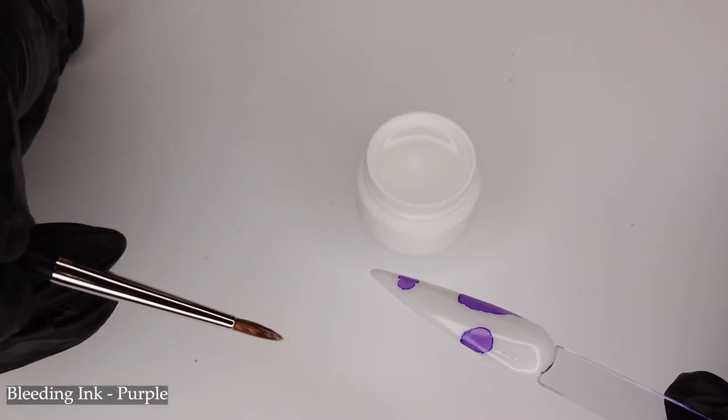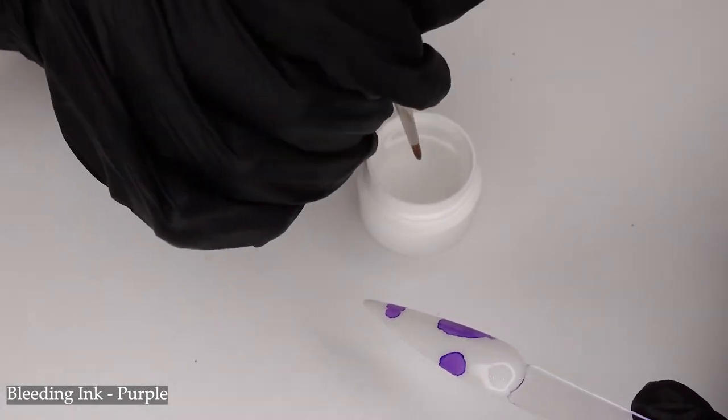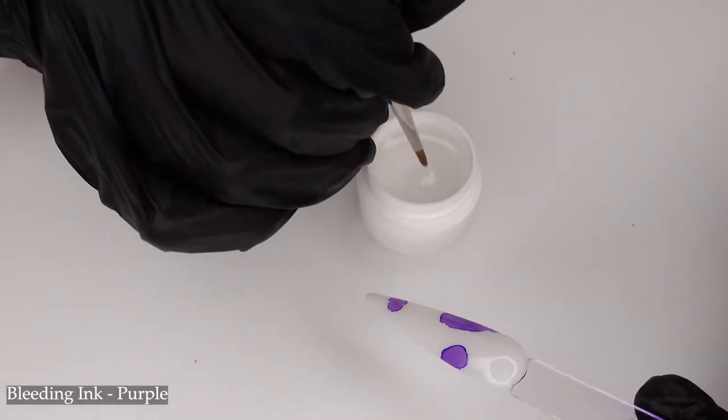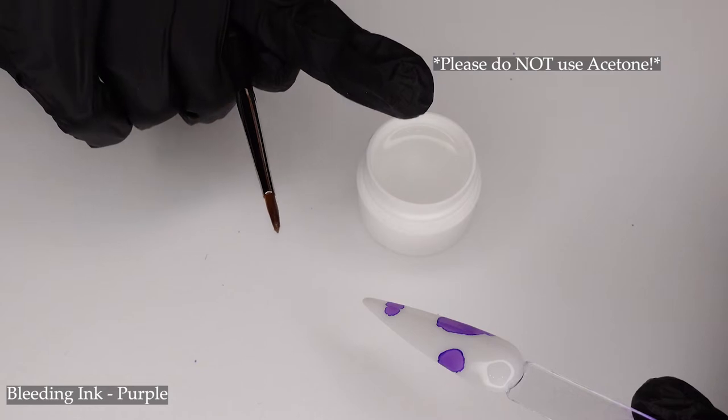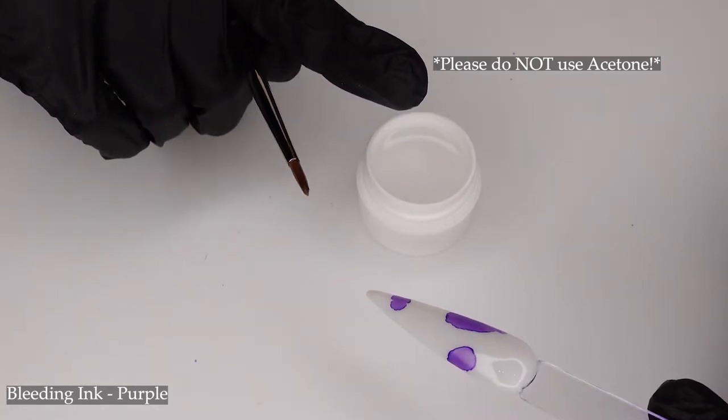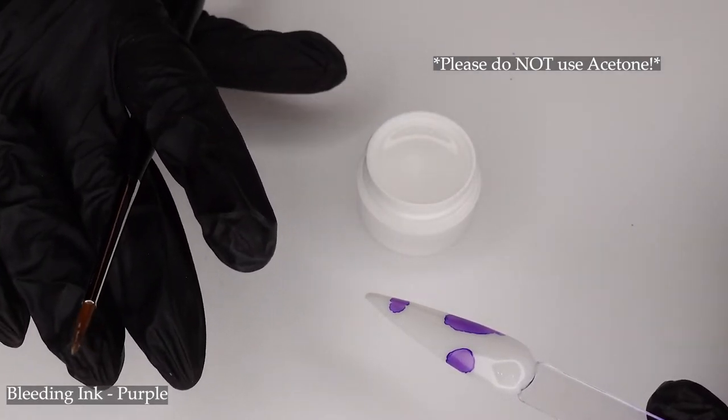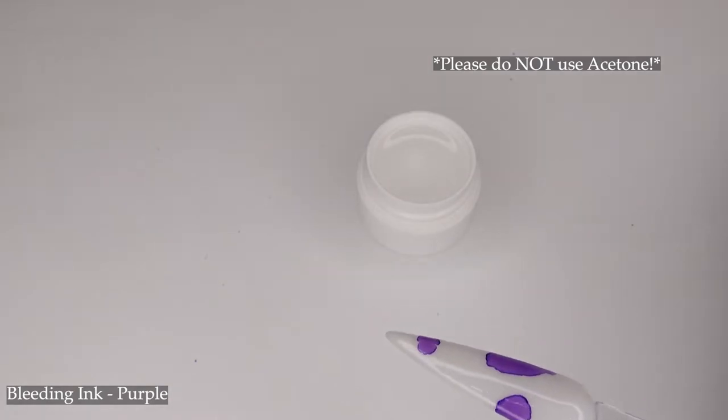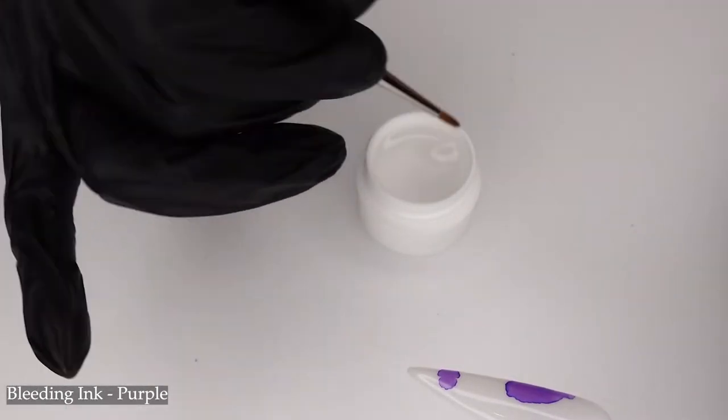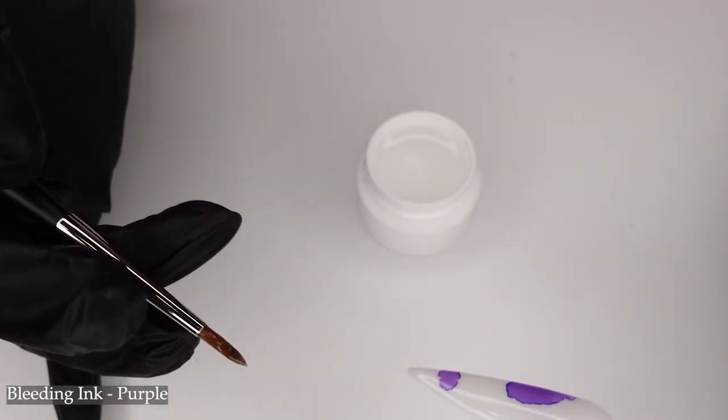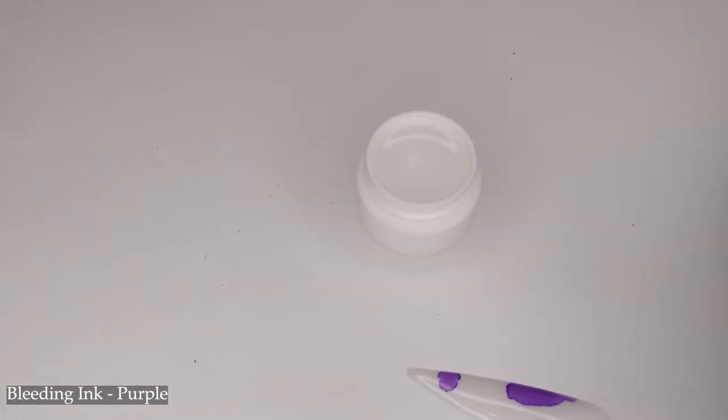So now I'm just going to take my pointed brush. I already dipped it in my alcohol right here. Mind you, I said alcohol and not acetone. Please don't use acetone for this. I'm sure you know that, but just as a warning, don't use acetone. And then I'm just going to wipe off some of the excess of my alcohol with a paper towel. That way you don't need that much.